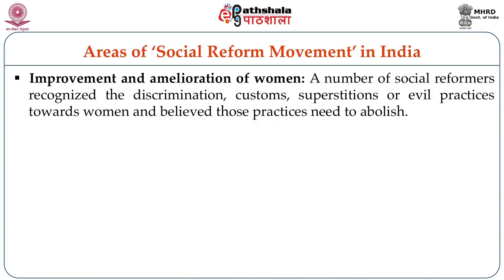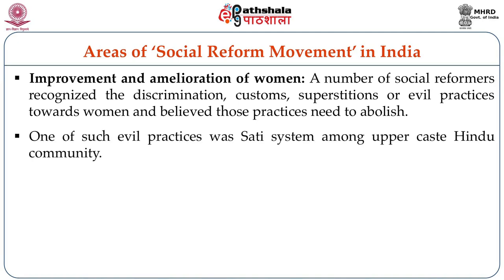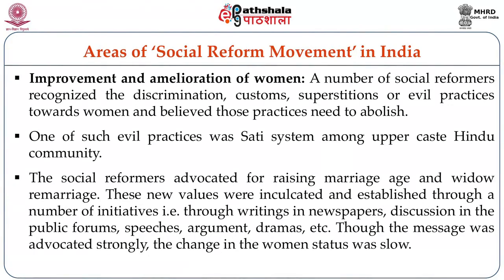Next, improvement and amelioration of women. A number of social reformers recognized the discrimination, customs, superstitions and evil practices towards women and believed those practices needed to be abolished. One such evil practice was the Sati system among upper caste Hindu communities. The social reformers advocated for raising the age of marriage and widow remarriage. These new values were inculcated and established through writings in newspapers, discussions in public forums, speeches, arguments, dramas, etc. Though the cause was advocated strongly, the change in women's status was slow.